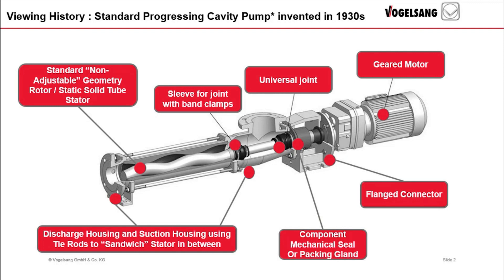The driven shaft is concentrically rotating and must drive the rotor head, which rotates eccentrically. This transition in motion is most often achieved via two articulated universal joints, represented here as a pin joint. The stator is shown as a steel tube containing an elastomer, held in place and stationary via tie rods, which pull the suction and discharge housings together, sandwiching the stator in between.